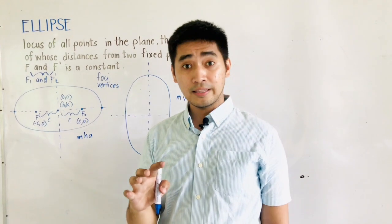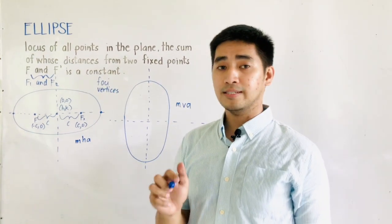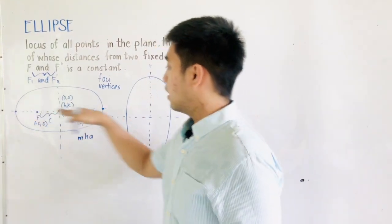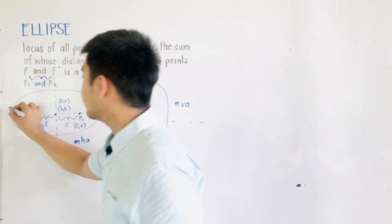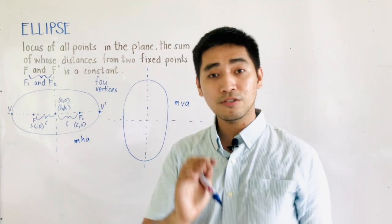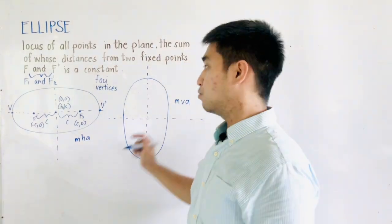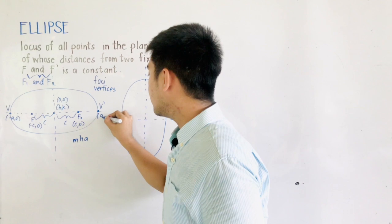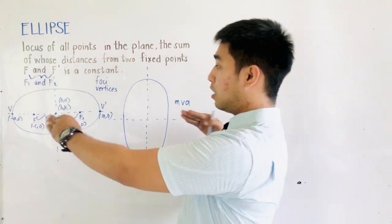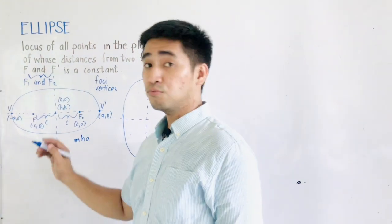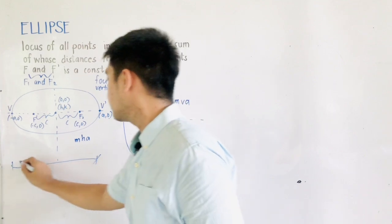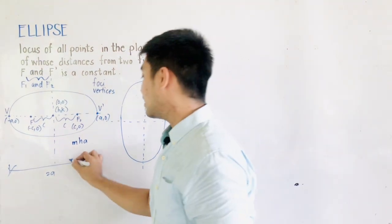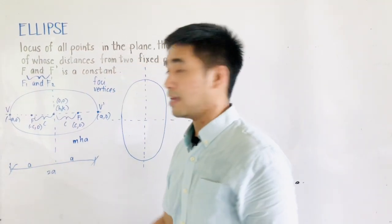Vertices are located on the major axis. Since this is the major horizontal axis, these are V and V' (or V1 and V2). V1 is at negative A and 0, and V2 is at positive A and 0. Therefore, the length of the major axis from vertex to vertex is 2A — because from the center to one vertex is A, and A plus A is 2A.